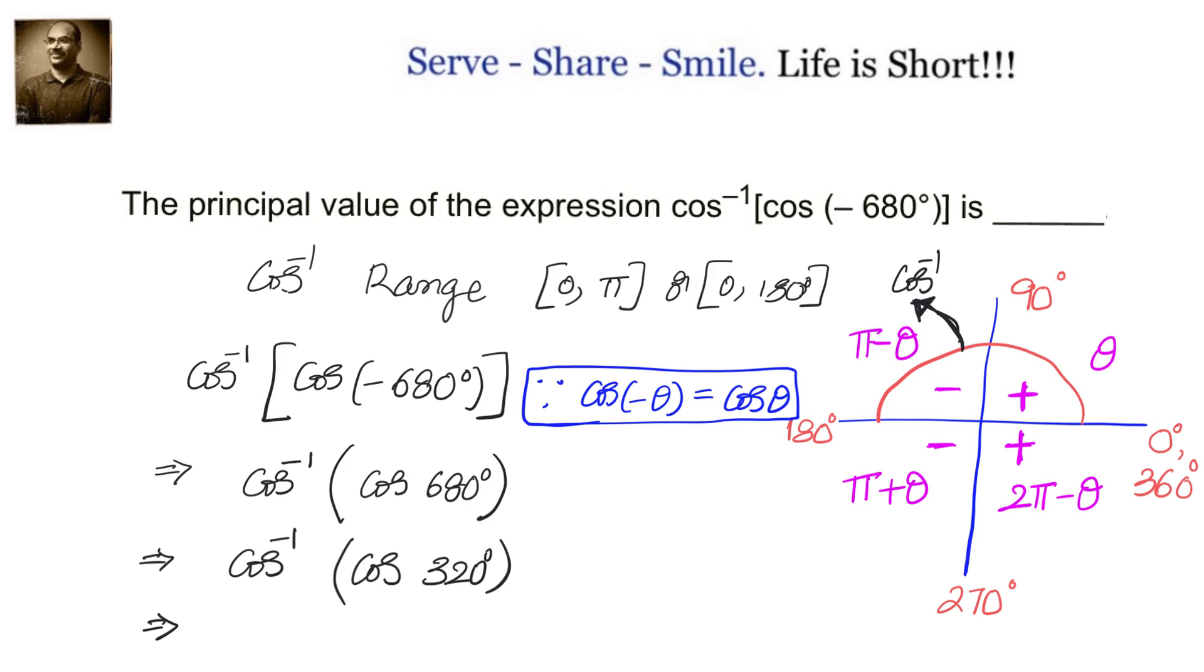Cos of 2 pi minus theta actually equals cos theta. That means cos of 320 degrees, which equals cos of 360 minus 40, equals cos 40 degrees.